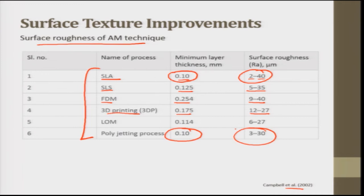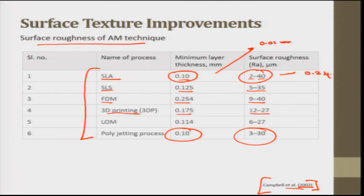This research is from 2002, and 17 years later, certain materials have been developed which can take rapid manufacturing minimum layer thickness down to 0.01 mm, with roughness as low as 0.2 micrometers. This is the present status of the technology.